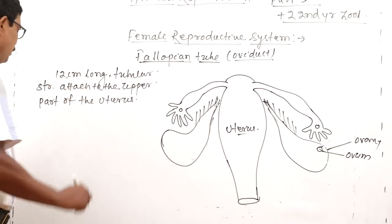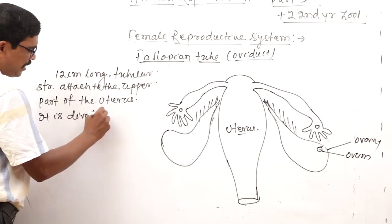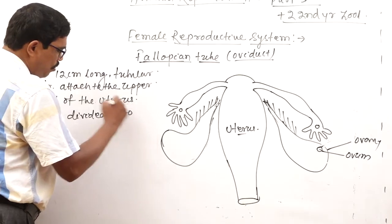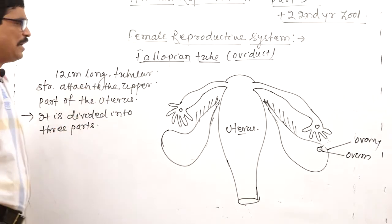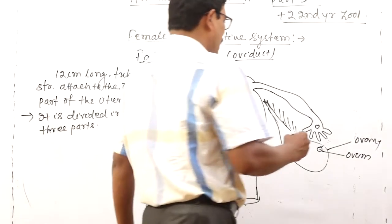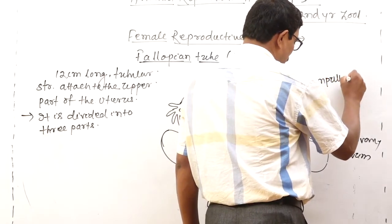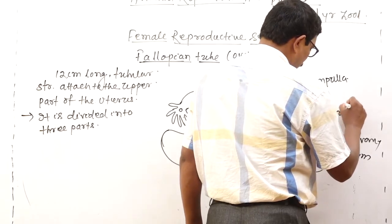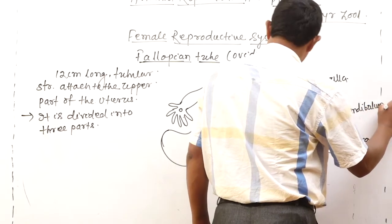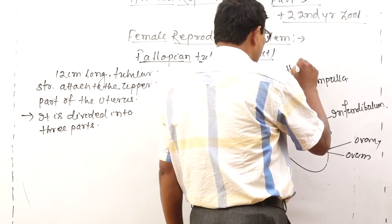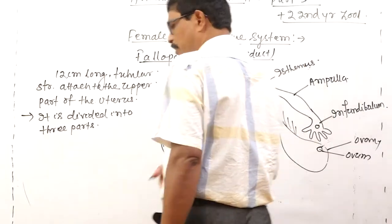The fallopian tube is divided into three parts: infundibulum, ampulla, and isthmus.